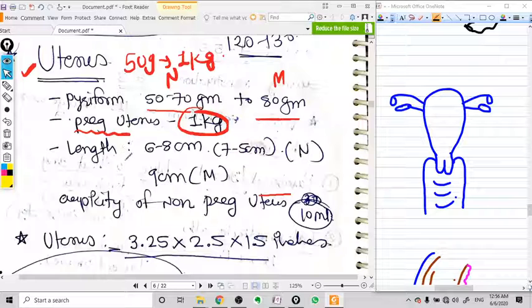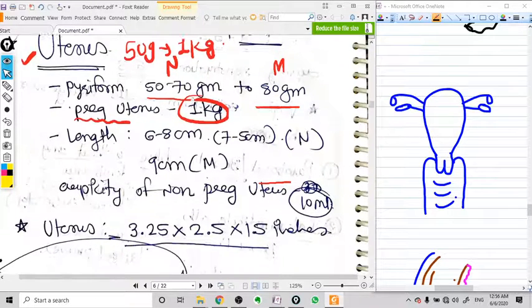Can you see the change from 50 grams to one kilogram? This is a drastic change, and that's why the uterus is the organ of reproduction because only the uterus can change to this limit.